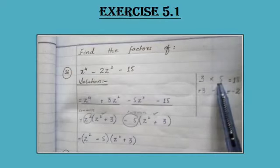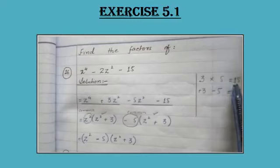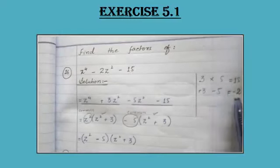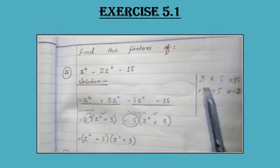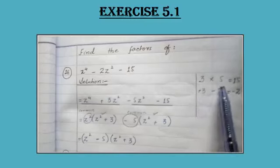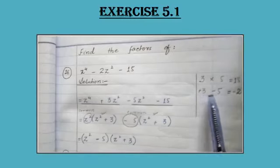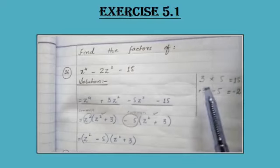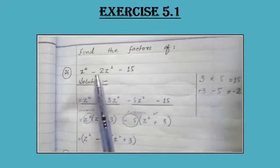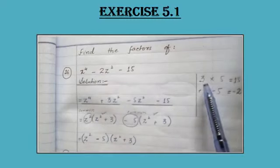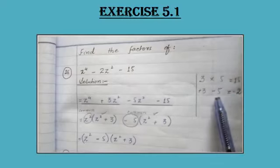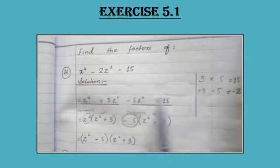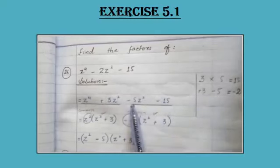If you multiply 3 by 5, 3 fives are 15. Now adjust 3 and 5 to get minus 2. So we have plus 3 and minus 5. Plus minus gives minus, and the result is minus 2. You have to break this minus 2 into two numbers: plus 3 and minus 5.